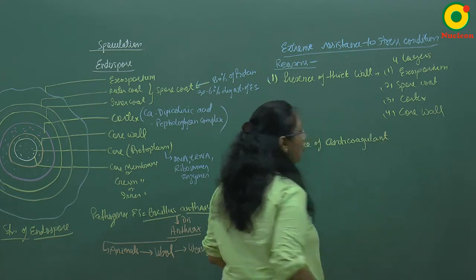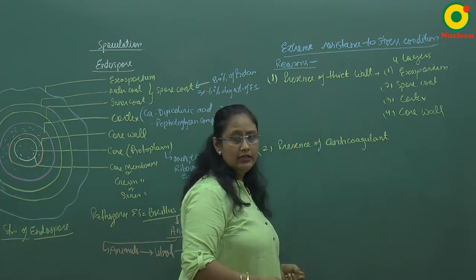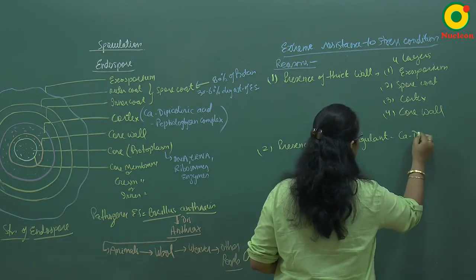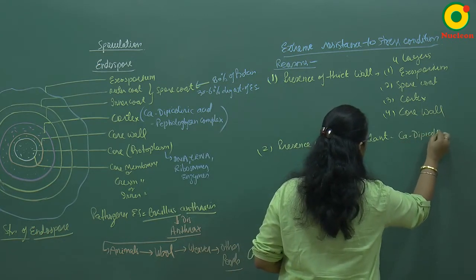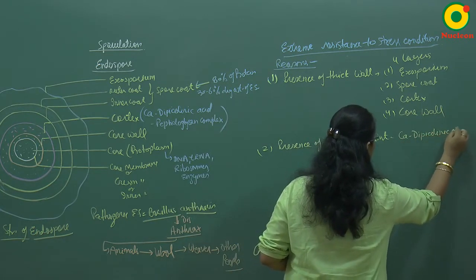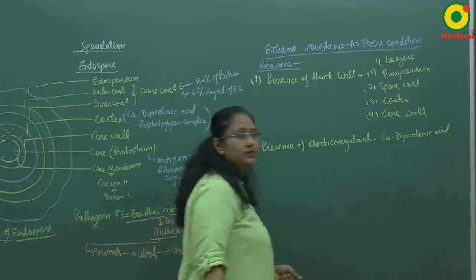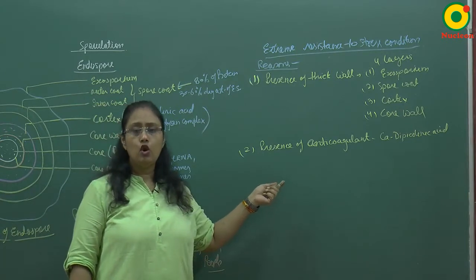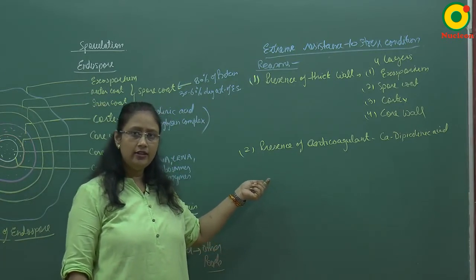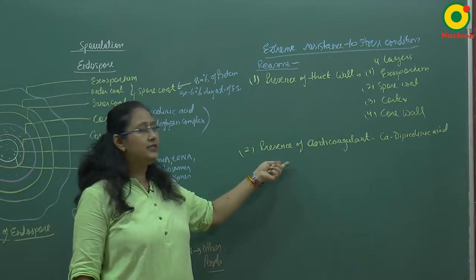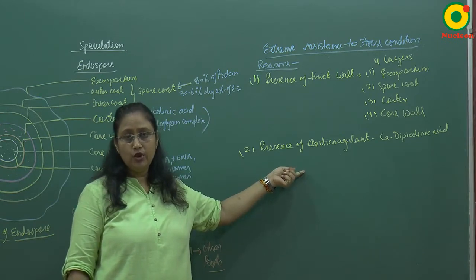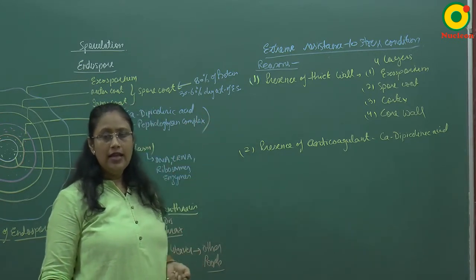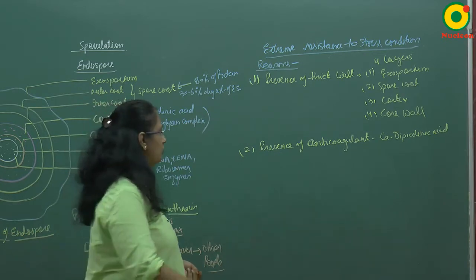The second reason is the presence of an anti-coagulant. The calcium dipicolinic acid present in the endospore plays the role of an anti-coagulant, preventing protein coagulation, which is responsible for the extreme resistance of the endospore.